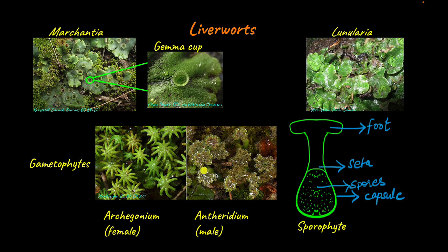Initially the sporophyte develops inside the archegonium. As the sporophyte develops, the seta elongates, causing the sporophyte to erupt from the archegonium. It is still attached to the archegonium by the foot but is now outside it. Once outside, the capsule ruptures and the spores are dispersed. The spores then land on surfaces and, under suitable conditions, germinate to produce new gametophytes.